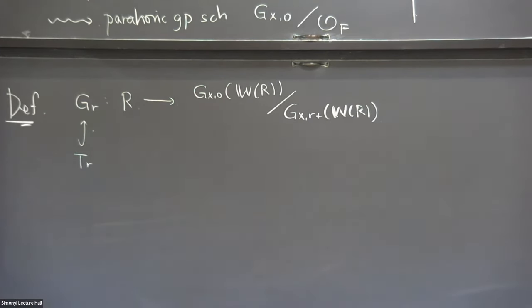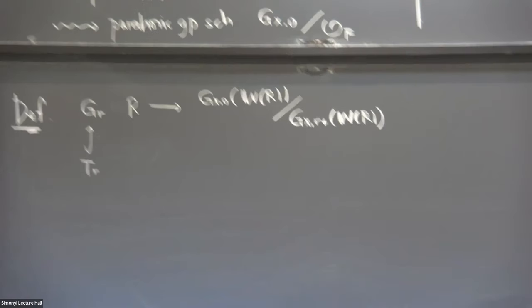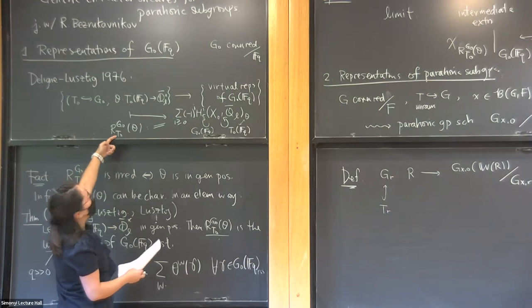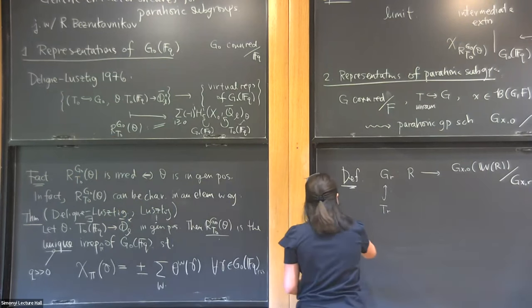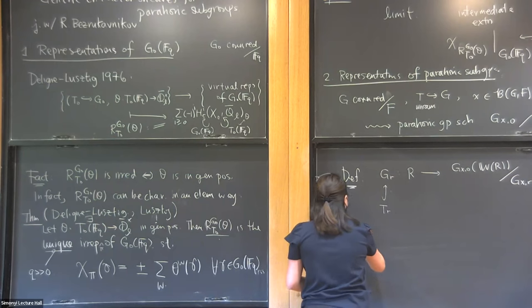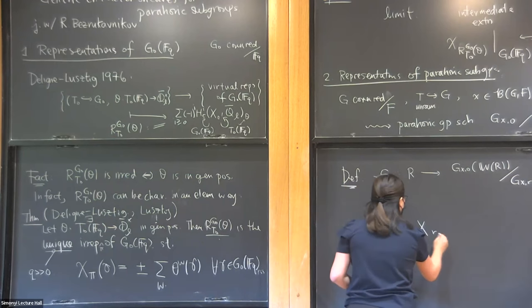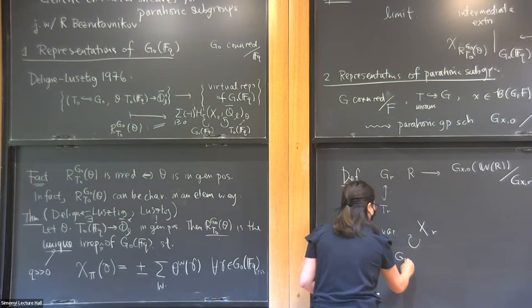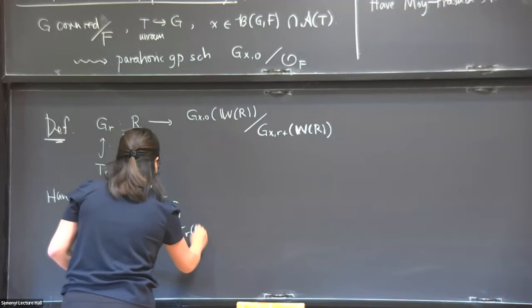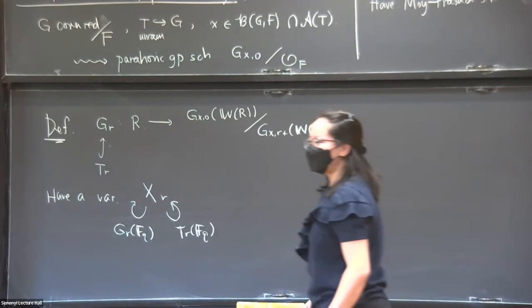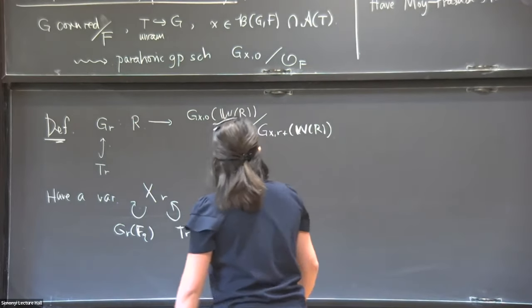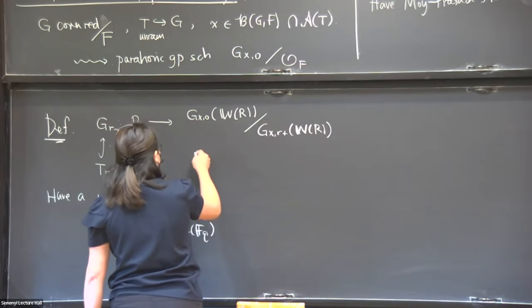The idea is that existence comes from doing the same picture as before, but now with G_R and T_R replacing G_0 and T_0. So we have a variety X_R that comes with commuting actions of G_R(F_q). For example, if X is hyperspecial inside GL_2, then G_R will look like GL_2.